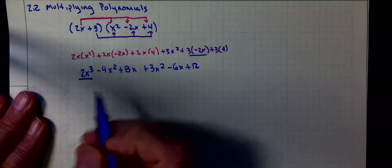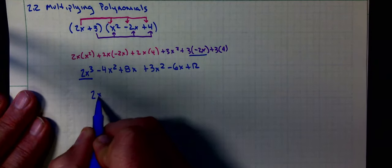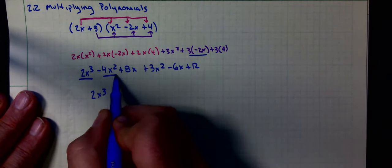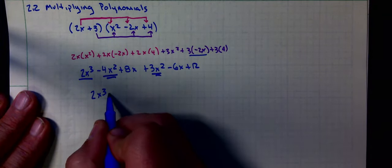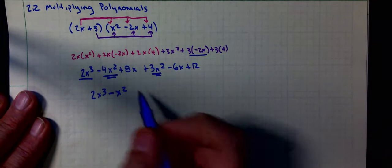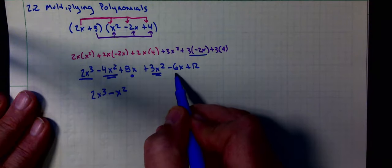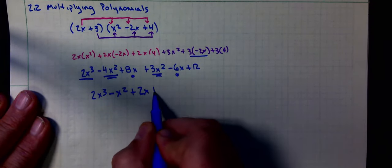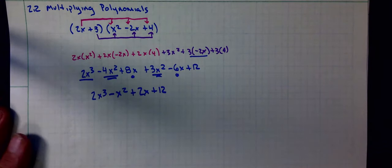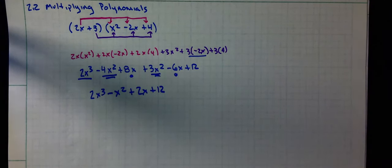Then we have to combine like terms. We'll start out with the cubes. There's only one cube term: 2x cubed. For x squared I have negative 4 plus 3, that's negative x squared. For the x's I have 8 minus 6, that's 2x, plus 12. That is the first method, it's called distribution.